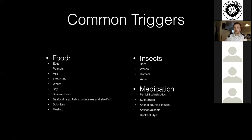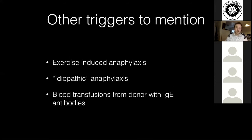There are a few other interesting triggers worth mentioning. Exercise-induced anaphylaxis is a real thing — some people, particularly when it's cold out, go into anaphylactic reactions based on extreme physical exertion, though we don't fully know why. There's also idiopathic anaphylaxis — the fancy way of saying you're having an allergic reaction and nobody knows why. And as a unicorn finding: some people can naturally produce IgE antibodies to particular things without severe reactions, meaning theoretically a blood transfusion from such a person could trigger anaphylaxis in a recipient. Extremely rare, but interesting.